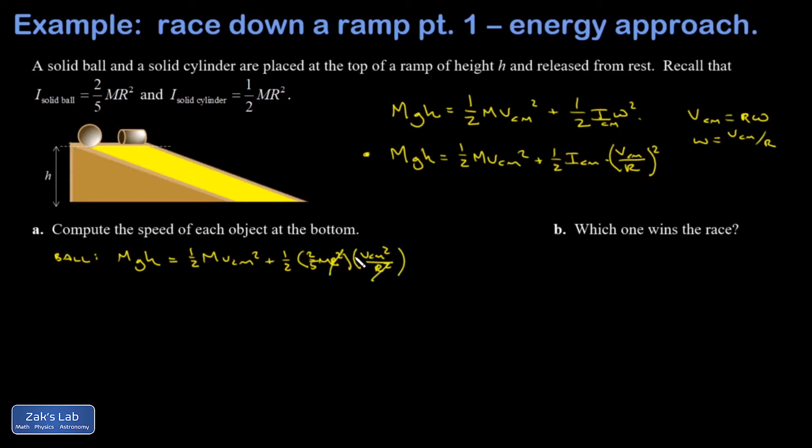I'm going to cancel a factor of two, and I get MGH equals one half MV center of mass squared plus one fifth MV center of mass squared. Notice that the mass is also irrelevant, so that's gone.